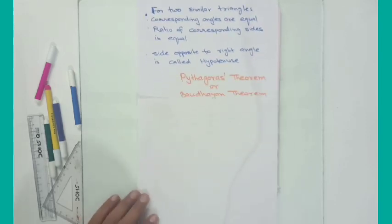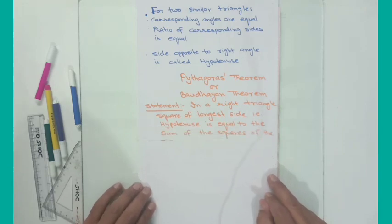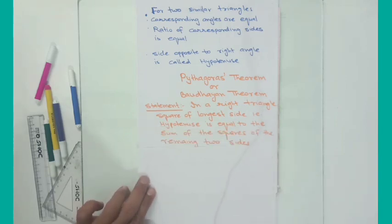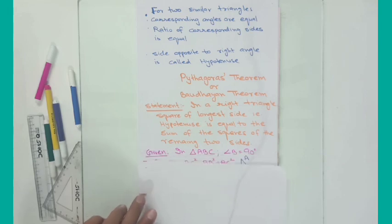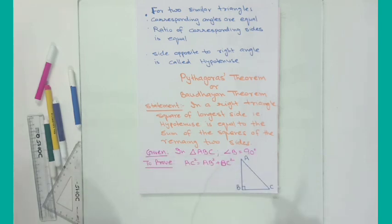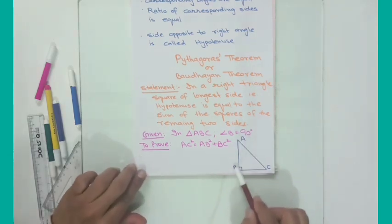Now let us start with the Pythagoras theorem or Baudhayan theorem. What does it state? This theorem states that in a right triangle, the square of the longest side, that is the hypotenuse, is equal to the sum of the squares of the remaining two sides. Here you can observe this triangle, triangle ABC.